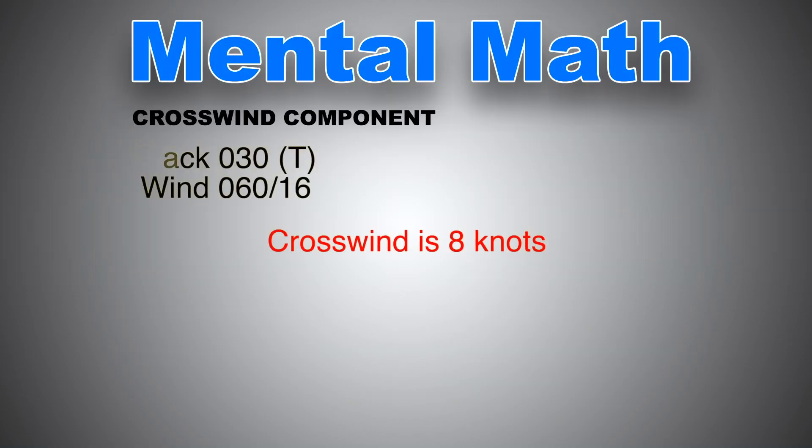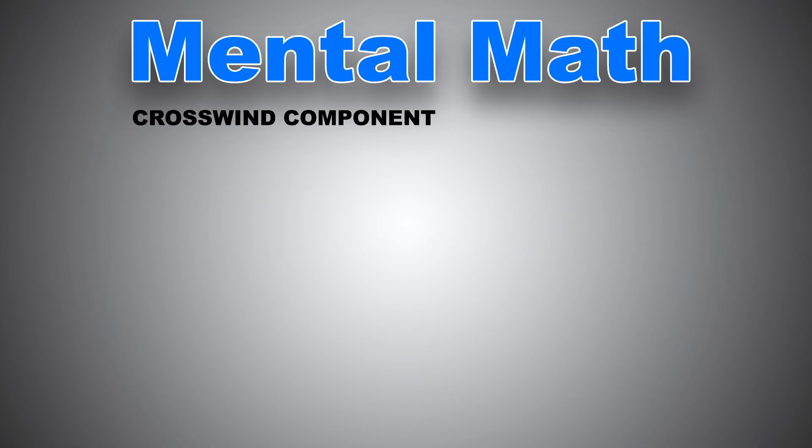Crosswind component is 8 knots. Let's check with the formula. The sine of 60 minus 30 times the wind speed of 16 gives us exactly 8 knots.